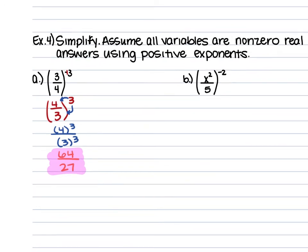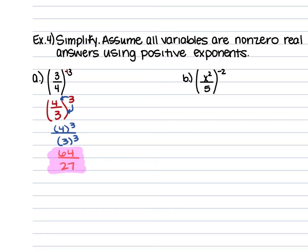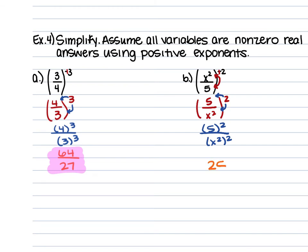For example 4b, we have x squared over 5 raised to the negative 2nd power. We turn that negative 2 into a positive 2 by taking the reciprocal of that fraction, giving us 5 over x squared raised to the positive 2nd power. That power of 2 goes to both numerator and denominator: 5 squared is 25, and x squared raised to the 2nd power — we multiply 2 times 2 — gives us x to the 4th. So the final answer is 25 over x to the 4th power.